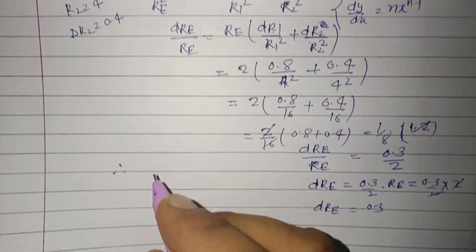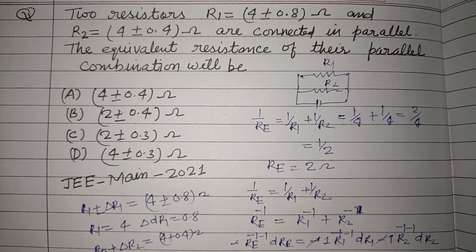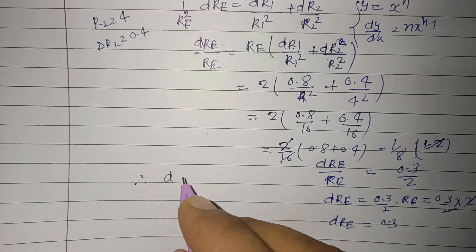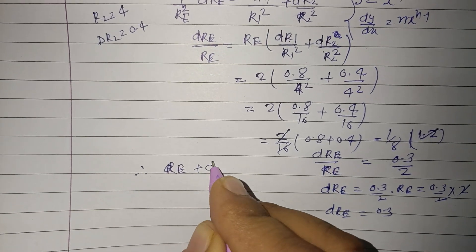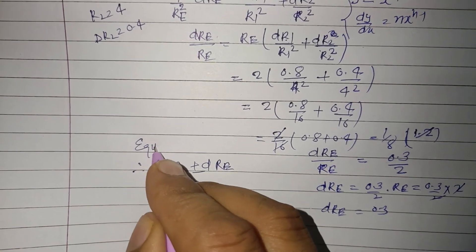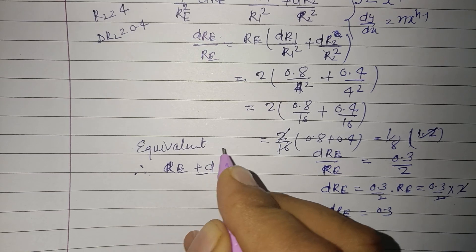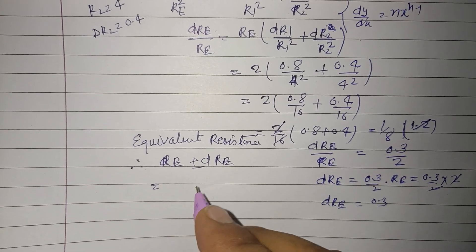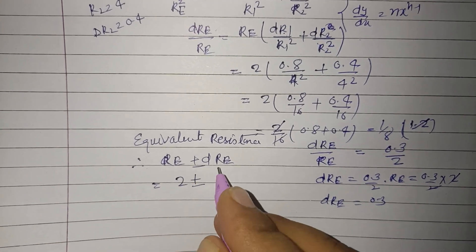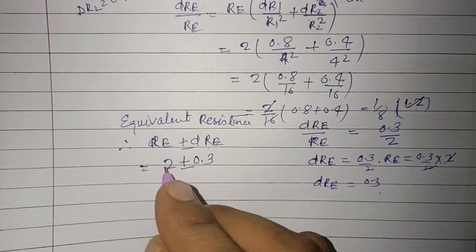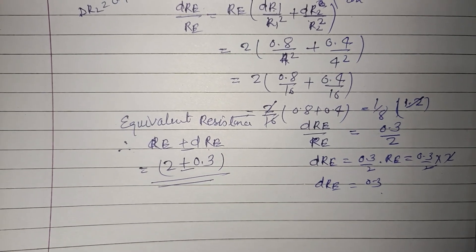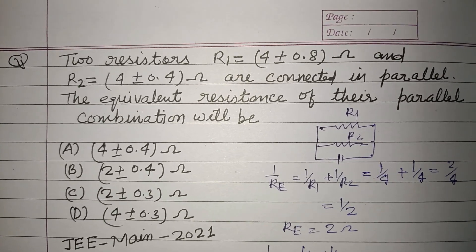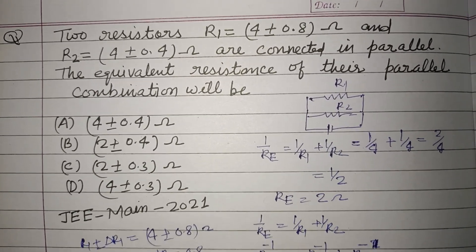Therefore, the equivalent resistor in parallel combination will be RE plus minus dRE. So this is RE is 2 plus minus dRE is 0.3. So this is our equivalent resistance in parallel combination of the given two resistances. So I hope you got it. Please like the video, subscribe the channel, thanks for watching.